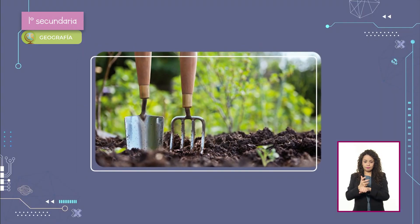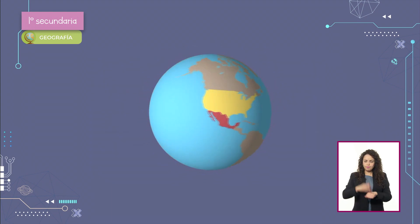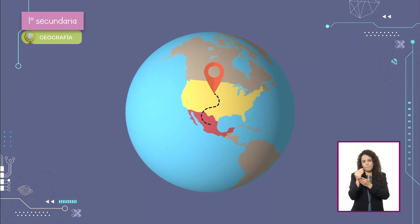El segundo tipo es la agricultura industrial, basada en sistemas intensivos con maquinaria, riego artificial, fertilizantes, químicos y plaguicidas, que permiten producir grandes cantidades de alimentos en menos tiempo y espacio, aunque con mayor daño al medio ambiente. Un ejemplo es el cultivo de cereales en Estados Unidos de América. El tercer tipo es la agricultura ecológica, la cual impulsa la producción de alimentos ocasionando menor impacto ambiental, pues se distingue por no agregar productos químicos a los cultivos.